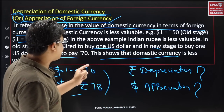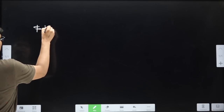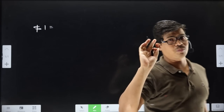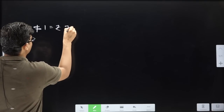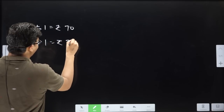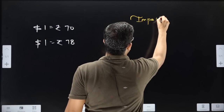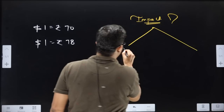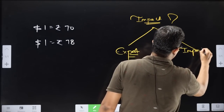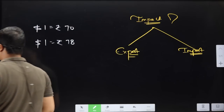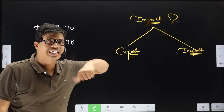Now we will talk about the effect on export and import. This is fully conceptual — you need to understand it. First, you were giving 70 rupees for one dollar, and now you are giving 78 rupees for that dollar. So what will be the effect on export and import?